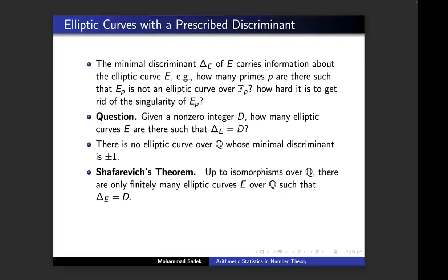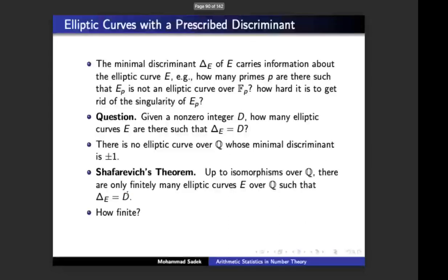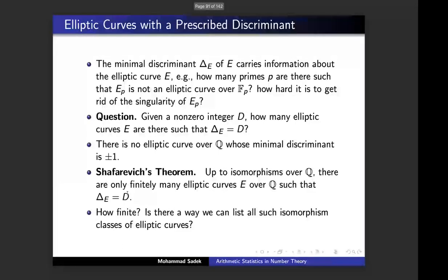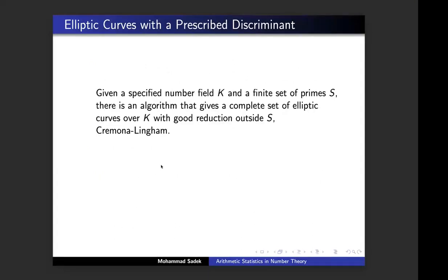So there are only finitely many elliptic curves with discriminant 5, or one million. But the question is: how finite? That remains a deep question. The next question is: can I describe all elliptic curves with a given discriminant? Cremona, together with his student Lingham, managed to show that there is an algorithm: give me a set of primes S, and the algorithm will produce all elliptic curves with bad primes from that set S.